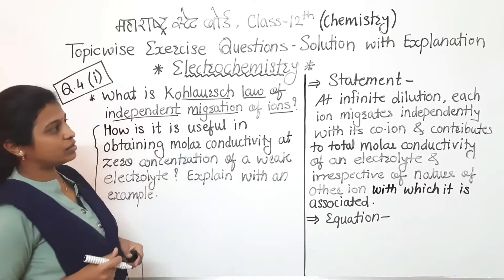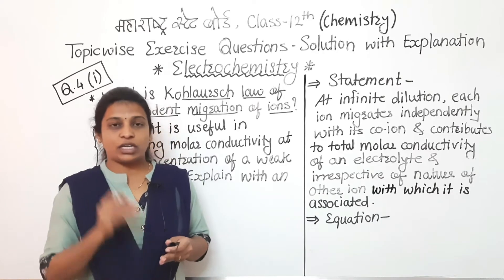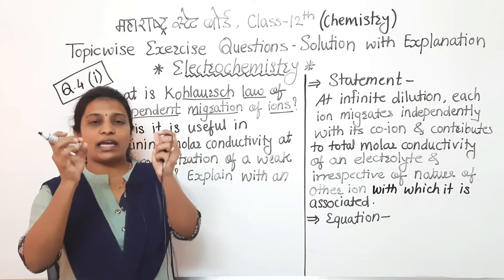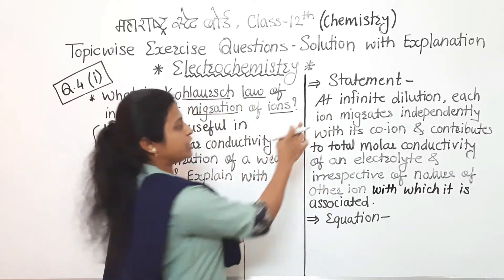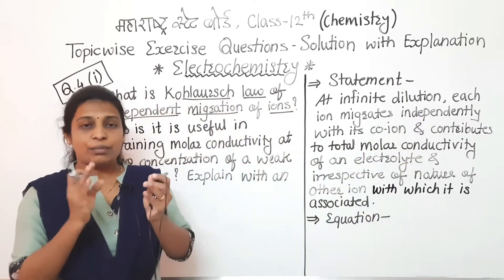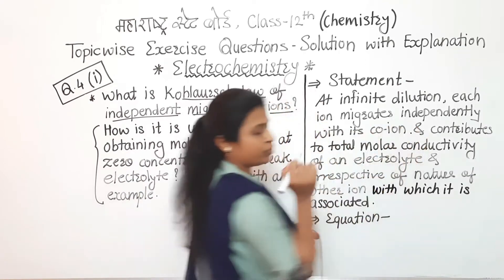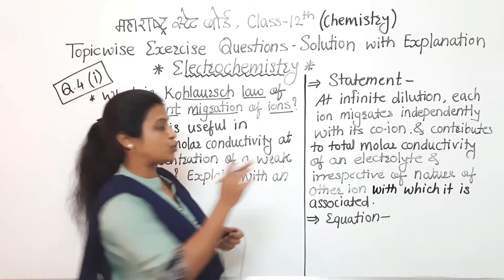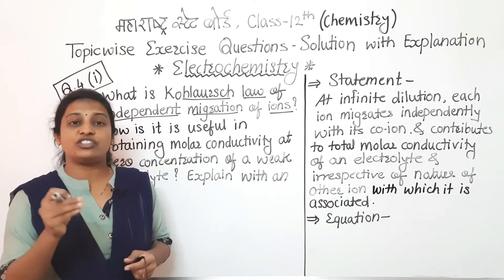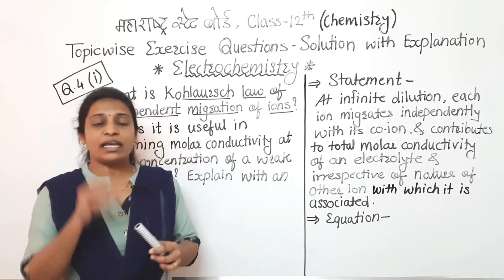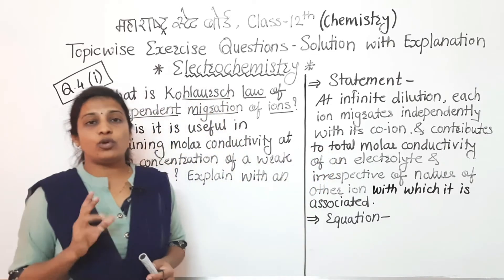We will start with the statement of Kohlrausch's law. At infinite dilution, cations as well as anions are present, and each ion migrates independently. The statement is: at infinite dilution, each ion migrates independently of its co-ion. That migration itself contributes to the total molar conductivity of an electrolyte, irrespective of the nature of the other ion with which it is associated.